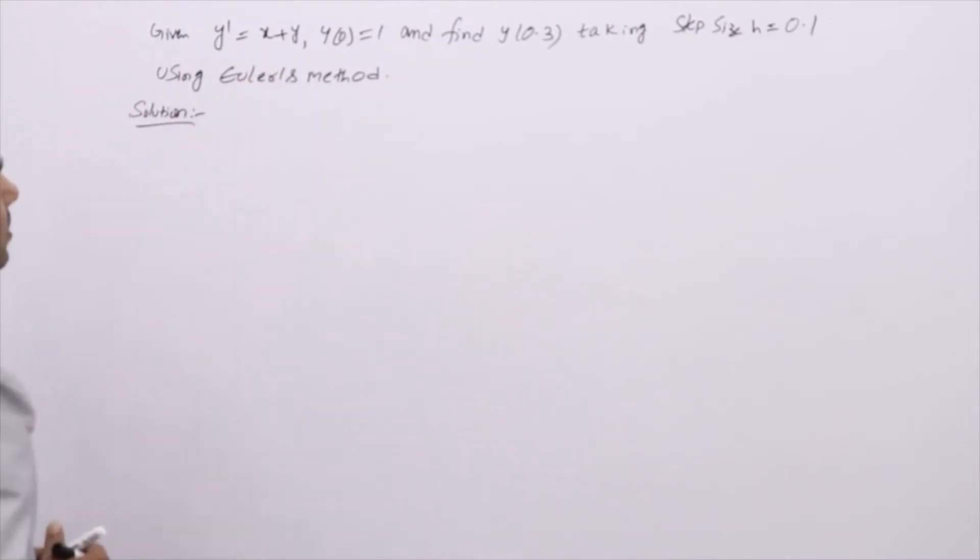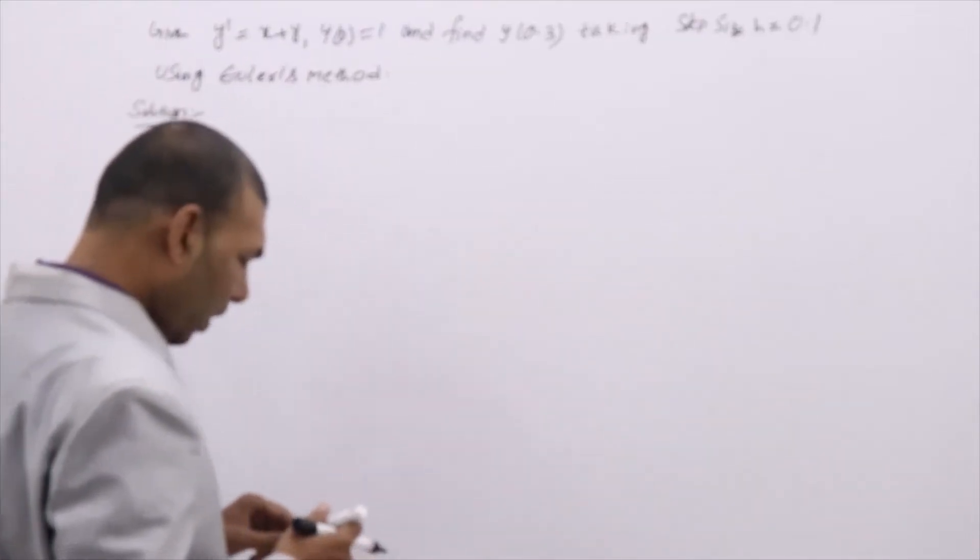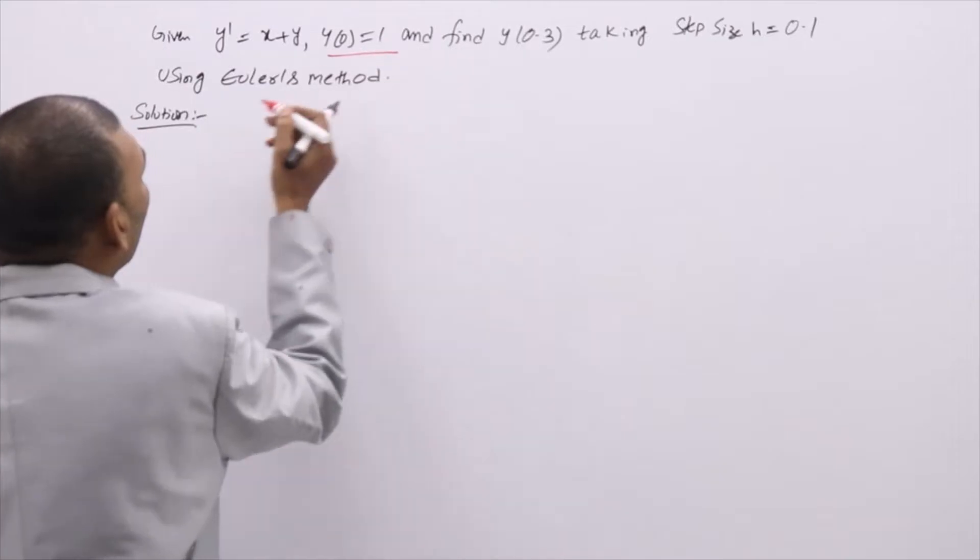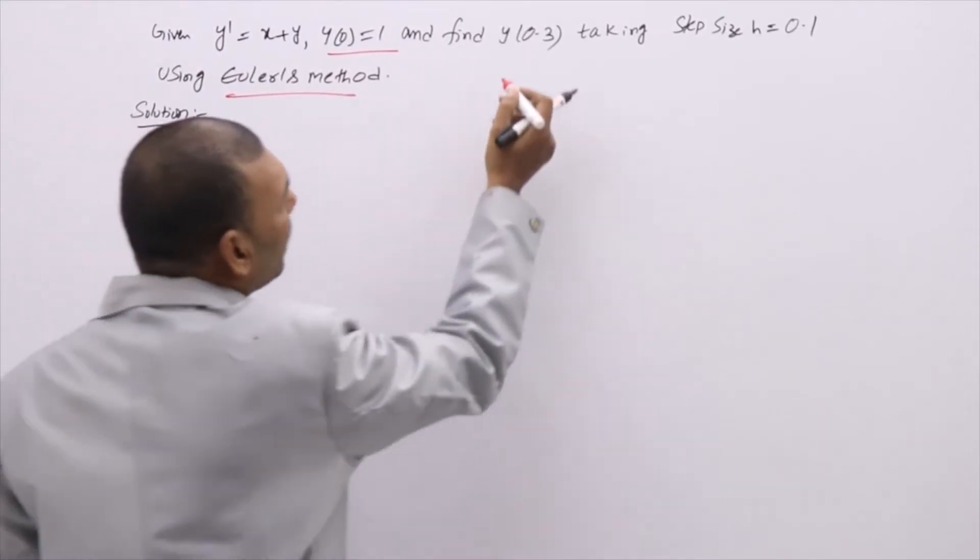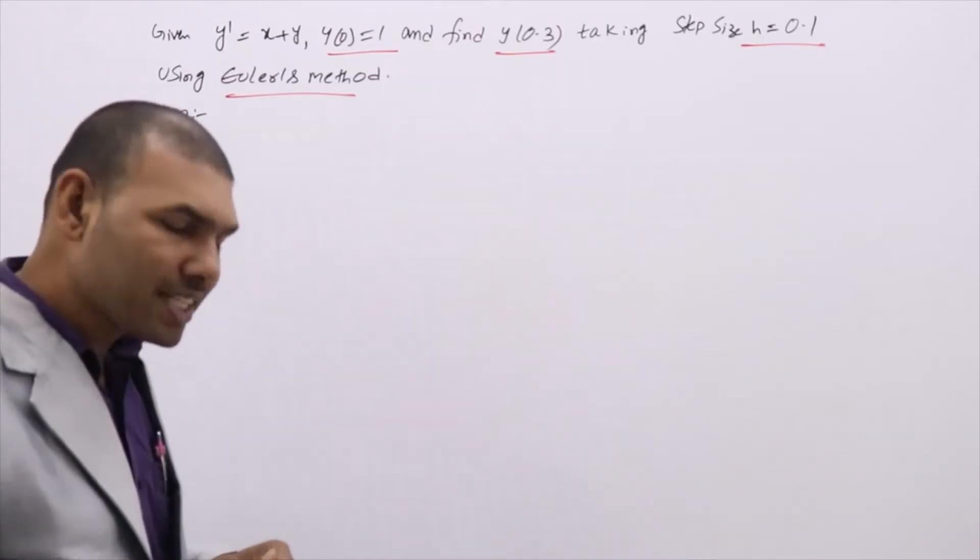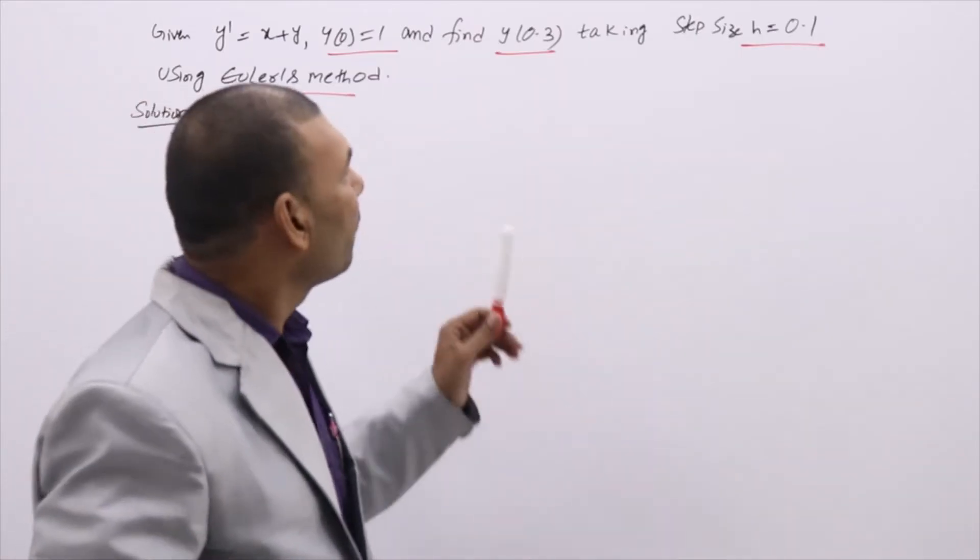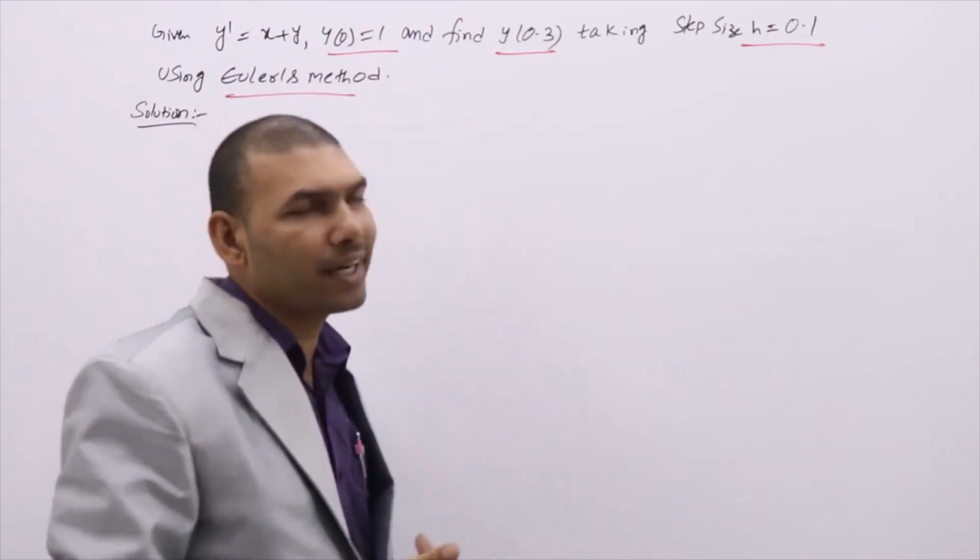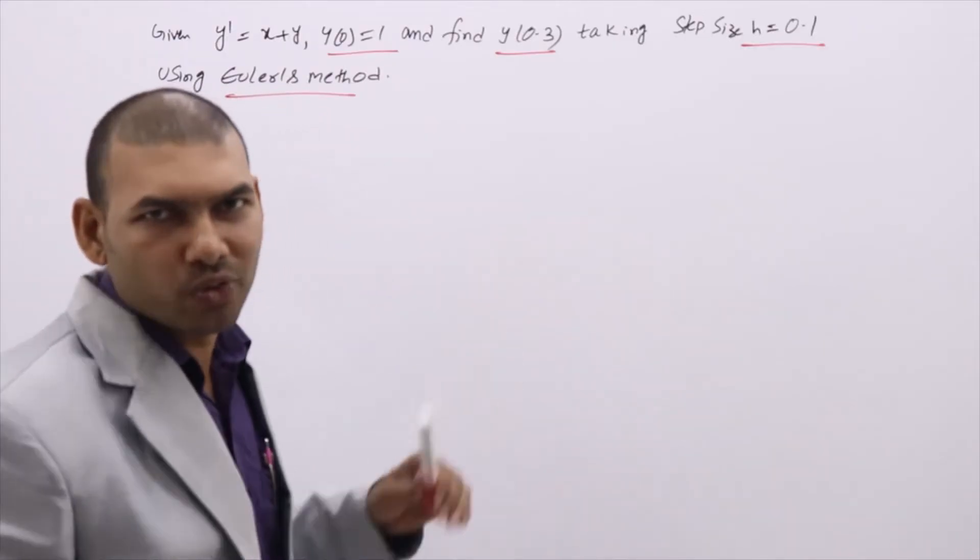Given y' = x + y, y(0) = 1, initial condition is y(0) = 1. We need to use Euler's method and we have to find y(0.3) by taking h = 0.1. Step size is 0.1. So when step size is given, how to find y₁, y₂, y₃ values, we will discuss in this problem.